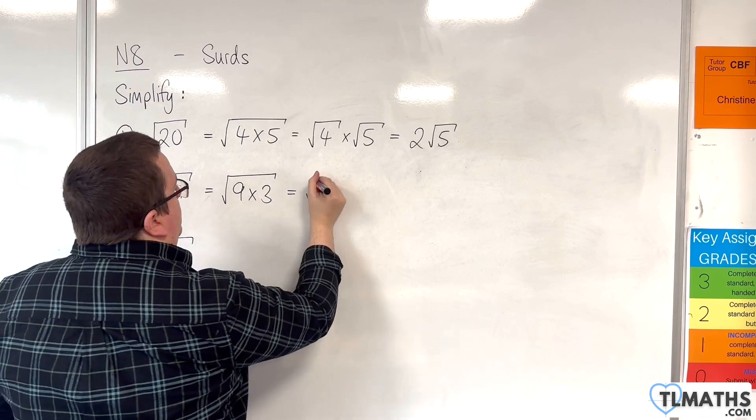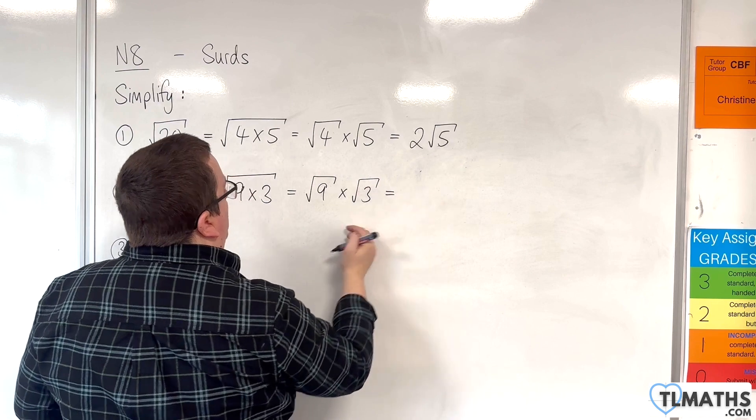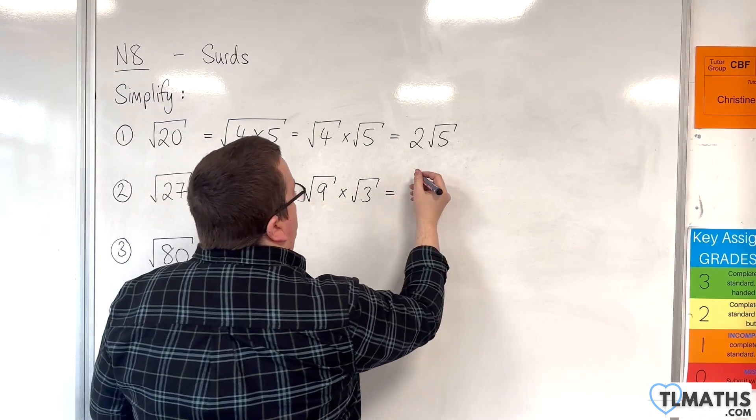Now we split that. The square root of 9 times the square root of 3. The square root of 9 is 3, so we have 3 root 3.